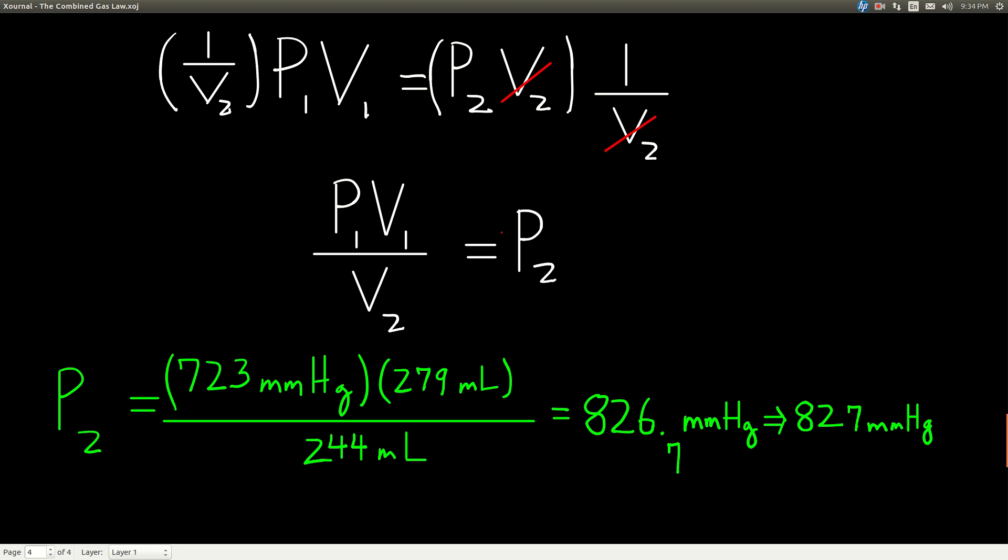And now all we do is plug in. So P1 was 723 millimeters of mercury and I just kept it in millimeters of mercury. That's what my answer is going to be in. The new pressure will be in millimeters of mercury. V1 was 279 milliliters. V2 is 244 milliliters. The units of milliliters cancel. And we're left with millimeters of mercury and 3 sig figs. Everything was 3 sig figs. So we end up with 827 millimeters of mercury.